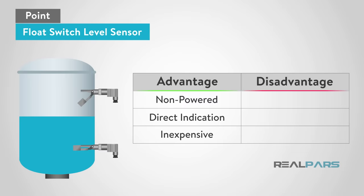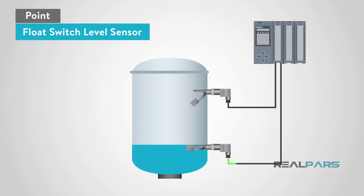The disadvantages are they are invasive to the product, they have moving parts, and can be large in size. Float switches will only give an indication for a high or low level, they cannot measure a variable level.